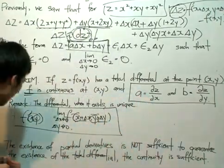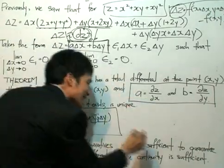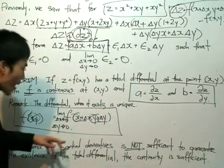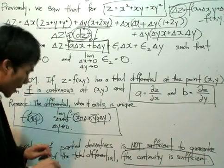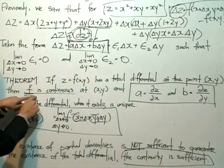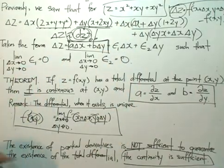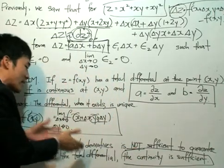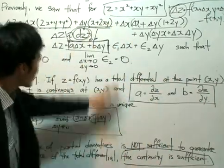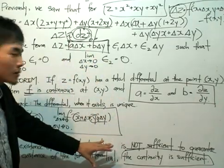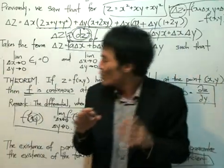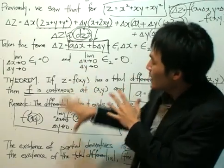An important remark: the existence of partial derivatives is not — I repeat, is not — sufficient to guarantee the existence of the total differential dz. Only the continuity of the partial derivatives is sufficient. We shall look at an example to show what this means. The function f being continuous and the partial derivatives being continuous are distinct conditions. If the partial derivatives are continuous, then the total differential exists, and if the total differential exists, then the function f is continuous. We'll see how to apply this to certain problems.